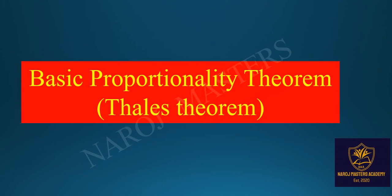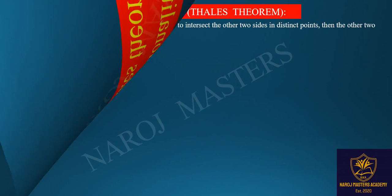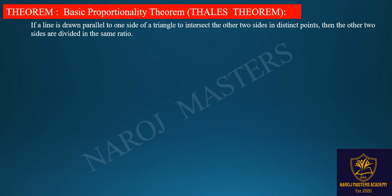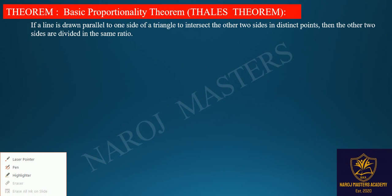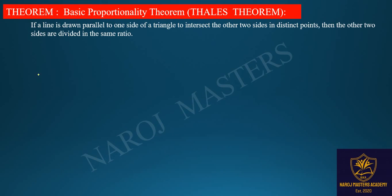Basic Proportionality Theorem, or Thales Theorem. If a line is drawn parallel to one side of a triangle to intersect the other two sides in distinct points, then the other two sides are divided in the same ratio.